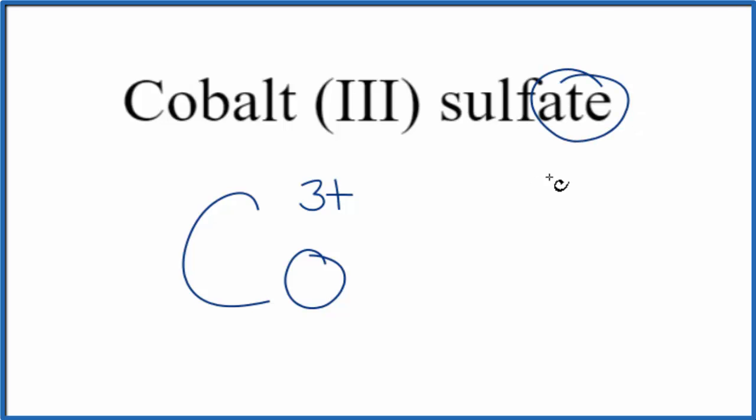Sulfate, when you see ATE, that's not going to be on the periodic table. So sulfate is a polyatomic ion, and this is a good one to memorize. It's SO4, and the charge on the whole sulfate ion is 2-.